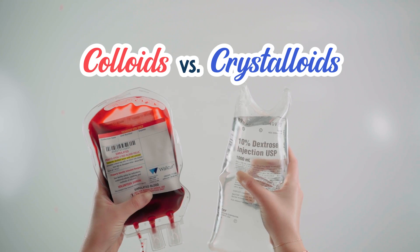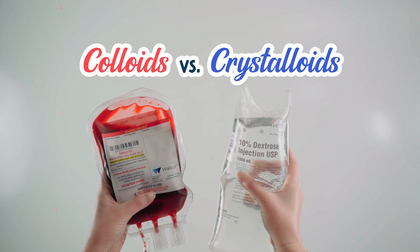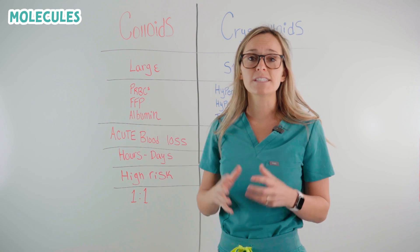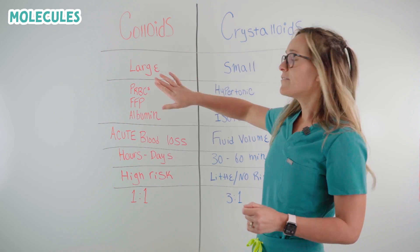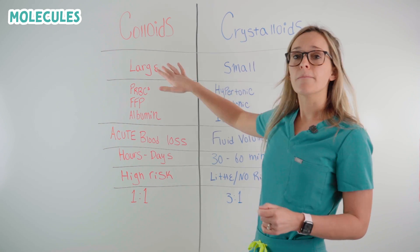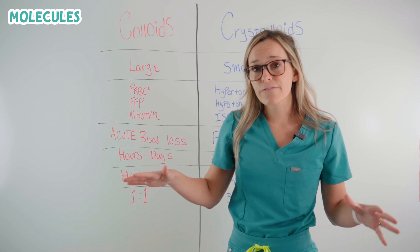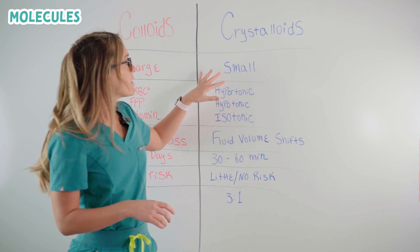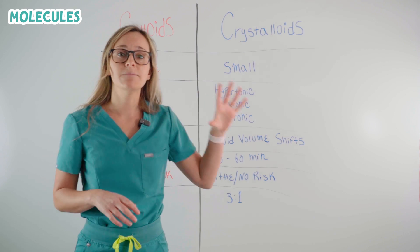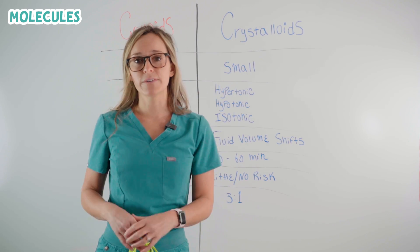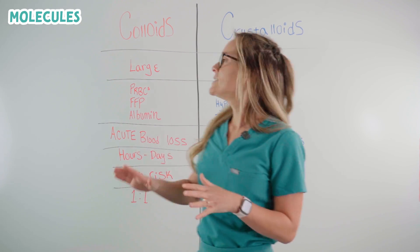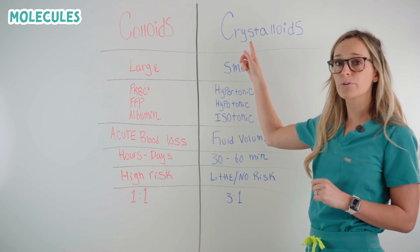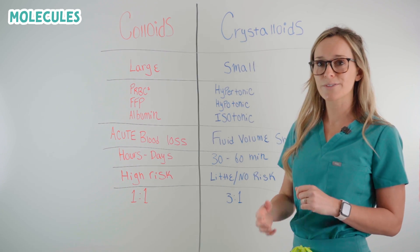Let's compare colloids versus crystalloids. First, let's compare the size of the molecules seen in both. Colloids have large molecules, making them very efficient in increasing blood volume, where crystalloids have small molecules, providing immediate fluid resuscitation. The way I remember the difference between these two is to think crystals are small, so crystalloids have small molecules.